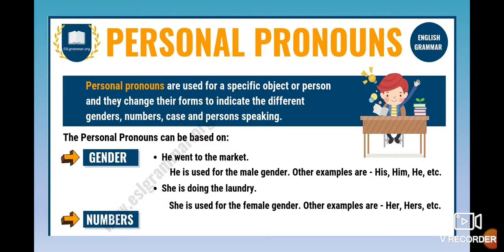Let's start with the personal pronouns. Personal pronouns are used for a specific object or person, and in some cases animals, and they change their forms to indicate the different genres. You know that the meaning of gender in Spanish is género, numbers, case, and persons speaking. If we talk about gender, the personal pronouns can be based on whether it is female or male — that means femenino o masculino.